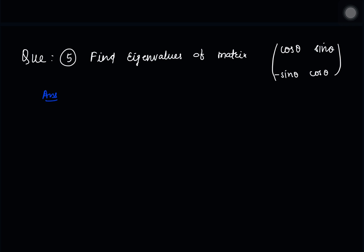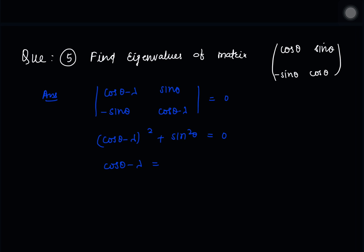Next, we find the eigenvalues of the rotation matrix. The matrix is [cosθ, −sinθ; sinθ, cosθ]. Setting the characteristic equation: (cosθ − λ)² − (−sin²θ) = 0, which gives (cosθ − λ)² + sin²θ = 0. So (cosθ − λ) = ±i sinθ, and the eigenvalues are λ = cosθ ± i sinθ.